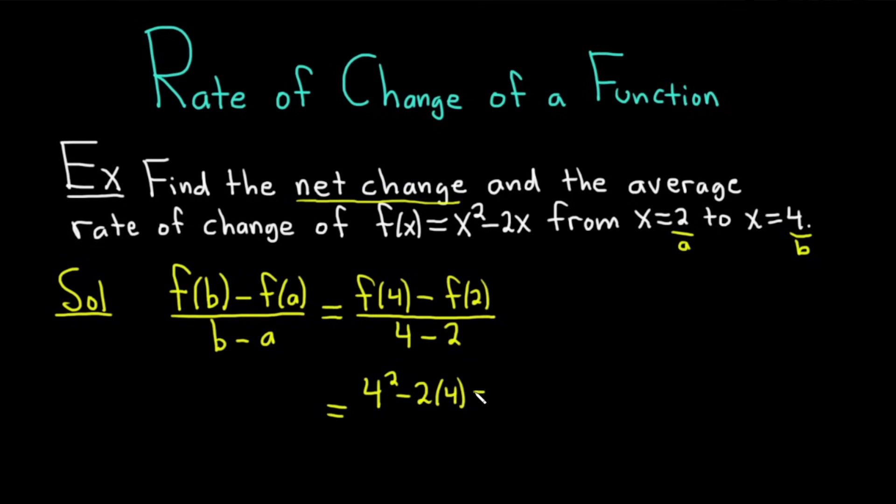And then minus, and now we're going to plug in 2, but keep in mind that f(x) is two terms so you do need a parentheses here. This will be 2² - 2(2). Be really careful with this formula, especially with the minus sign. The most common mistake people make is they forget the parentheses, so because we have two terms you need parentheses. And then 4 - 2 is 2.